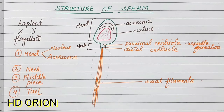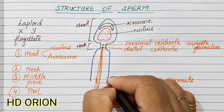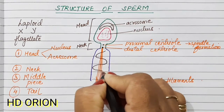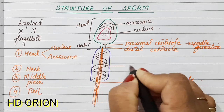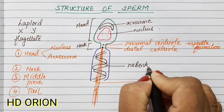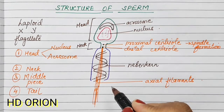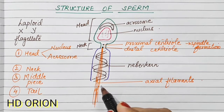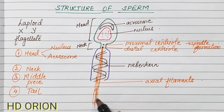The third portion is the middle piece. In the middle piece, mitochondria are packed in a spiral manner, and this spiral arrangement is known as the Nebenkern. The Nebenkern serves as the energy source because mitochondria generate ATP, which powers the flagellating tail used for propelling the sperm forward.